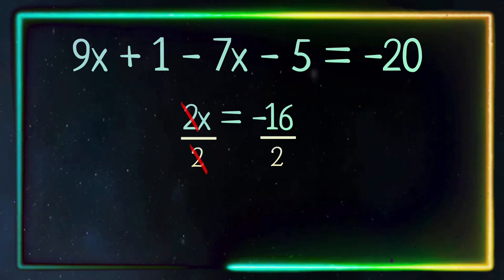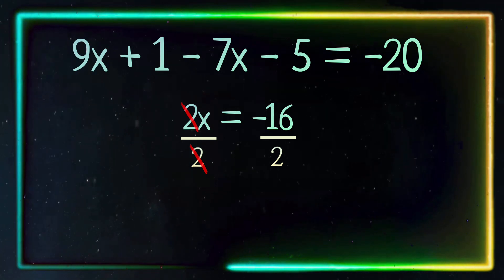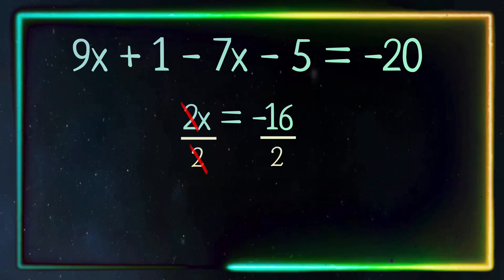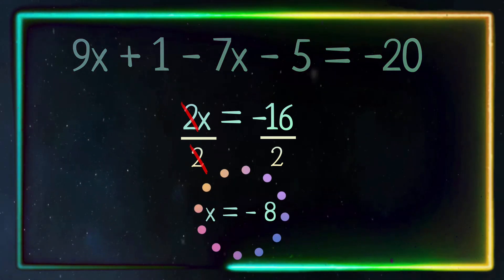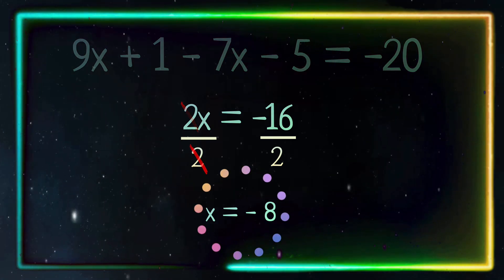Negative 16 divided by 2 equals negative 8. There's our answer: x equals negative 8.